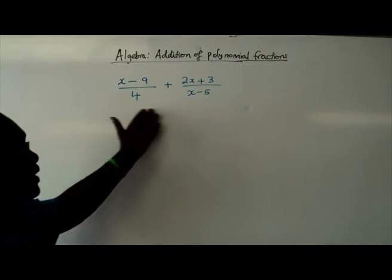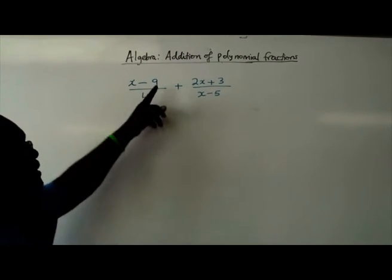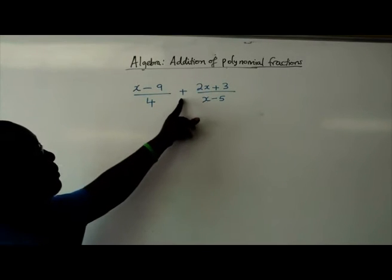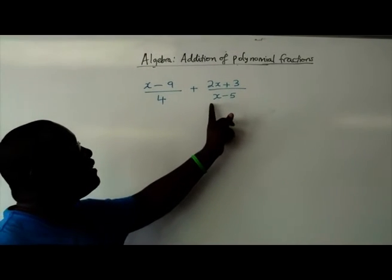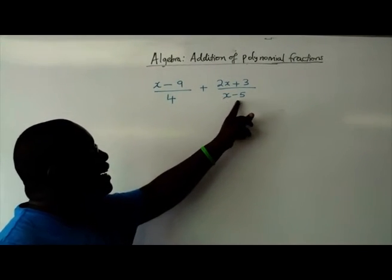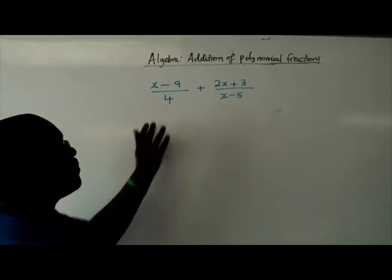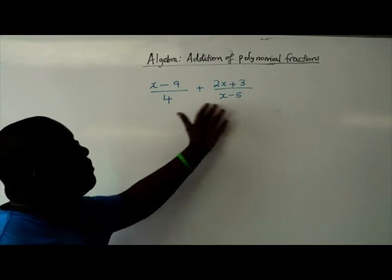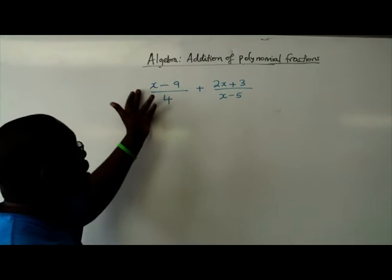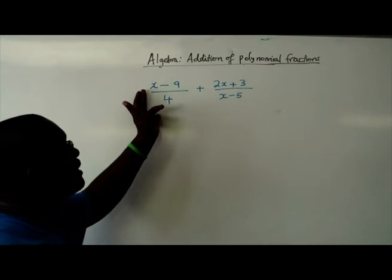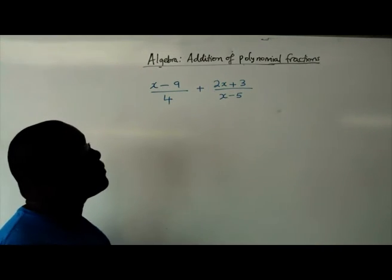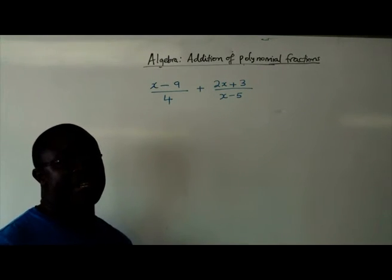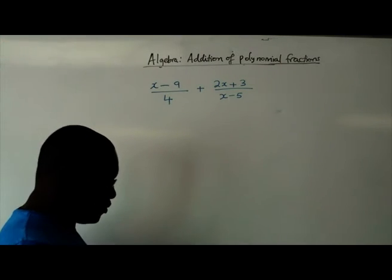Let's look at this example that we have here: x minus 9 over 4 plus 2x plus 3 divided by x minus 5. These are two fractions and they are polynomial fractions where they've got variables, in this case x. We're supposed to use our knowledge of addition of fractions to be able to add the two.